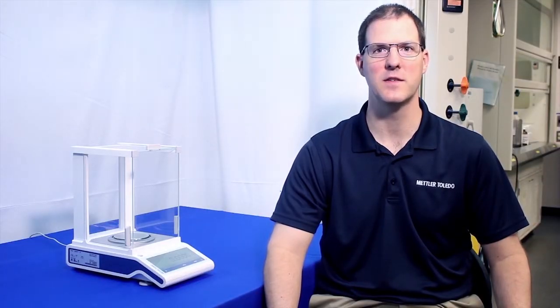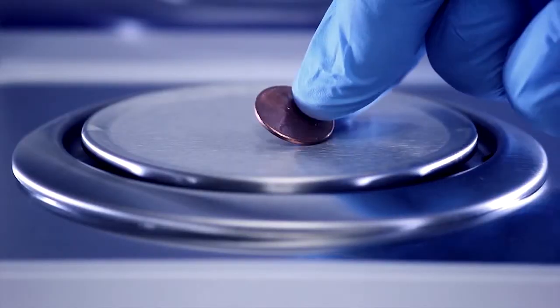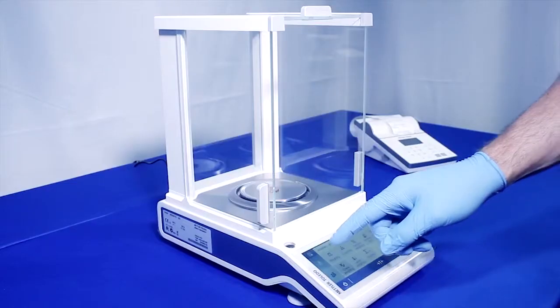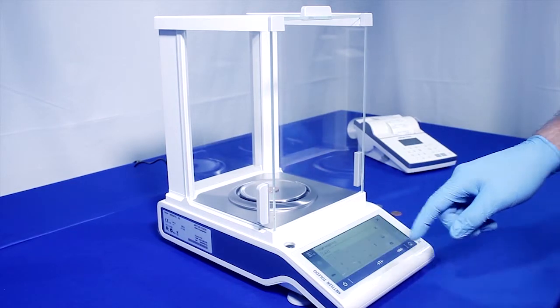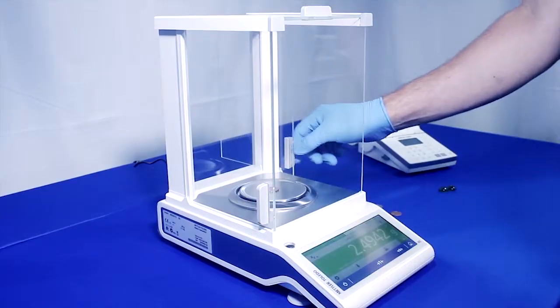As for weighing, there are 12 built-in applications that provide straightforward user guidance. The check weighing application allows you to enter a target weight and a desired tolerance for your item. The balance displays a green color indicator when you've reached the target value.